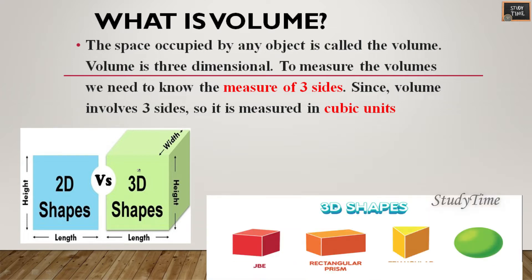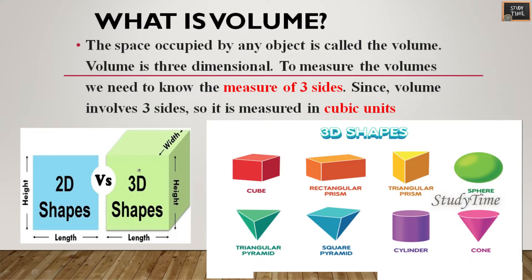So suppose 2D shapes, 3D shapes - if you compare, for 2D shapes it is area, not volume. For 3D shapes only you will be finding volumes. Say for example: cube, cuboid, cone, cylinder, sphere - all these are 3D shapes.